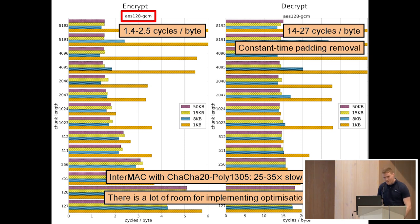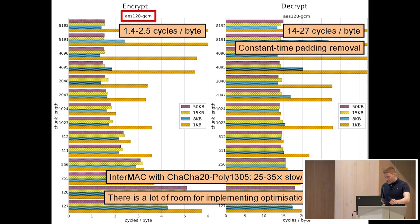The story completely changes for decryption — there you have a slowdown of a factor of 10. Much of that can be traced back to the constant-time padding removal. It slows down even more if you use ChaCha-Poly, which slows it down by a factor between 25 and 35.